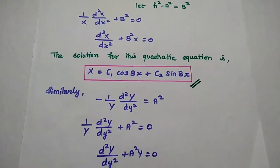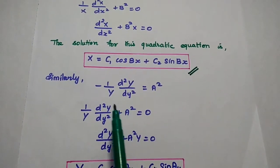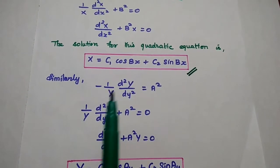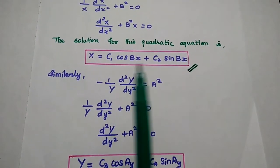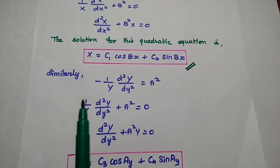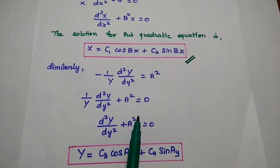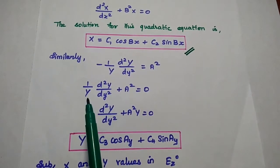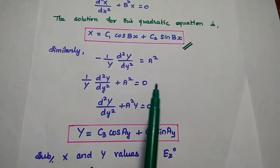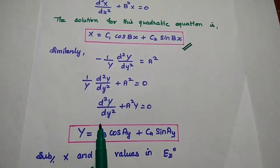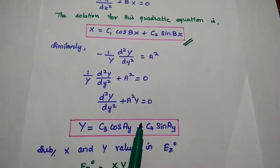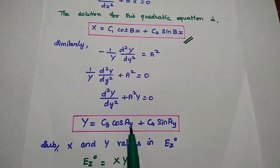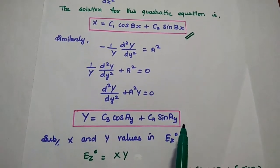Similarly, we find the value of the Y component. Considering the y components alone: minus 1/Y d squared Y by dy squared is equal to a squared. Moving the term gives 1/Y d squared Y by dy squared plus a squared is equal to 0. Taking 1/Y as a common term and moving it to the right-hand side gives d squared Y by dy squared plus a squared Y is equal to 0. The solution for this second order equation is Y equals c3 cos ay plus c4 sin ay.